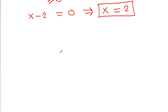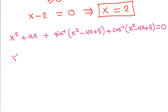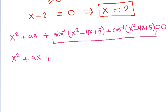The given equation becomes x² + ax + [sin⁻¹(x² - 4x + 5) + cos⁻¹(x² - 4x + 5)] = 0, which simplifies to x² + ax + π/2 = 0, using the identity sin⁻¹(a) + cos⁻¹(a) = π/2. There is only one possible value of x, which is 2.